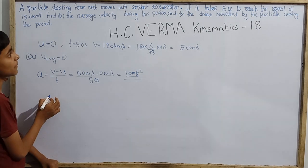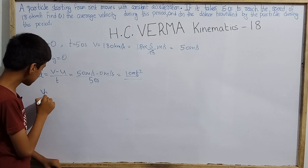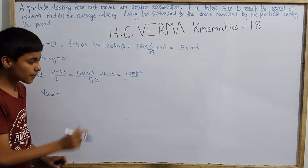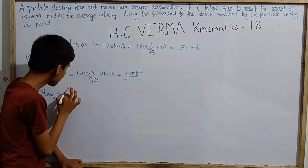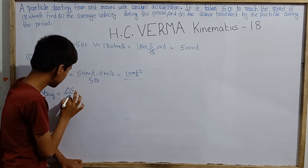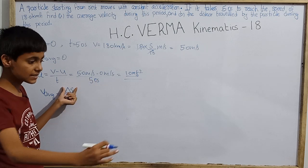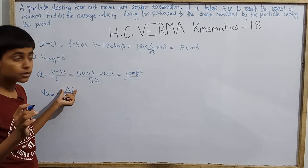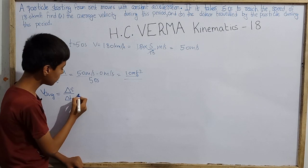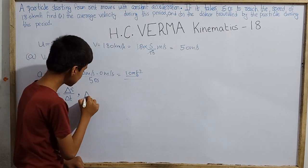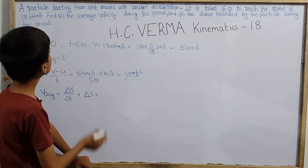Let's find average velocity. Average velocity is delta x upon delta t, or delta s upon delta t. But for average velocity we need total displacement. So first we find the displacement. Displacement is u t plus half a t square. Initially there was rest.